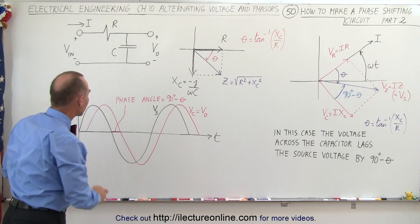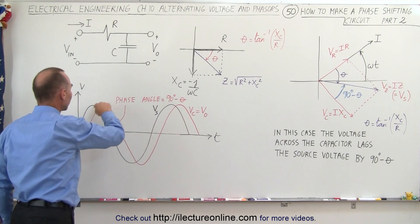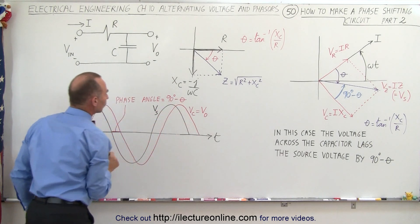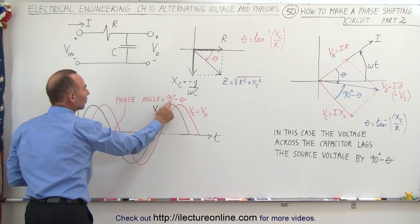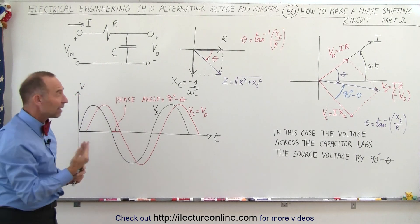So now when we look at this diagram right here, the black line represents the voltage across the source. The red line represents the voltage across the capacitor, which is the same as the output voltage. Notice that it's been shifted to the right, so there's a phase angle here of 90 degrees minus theta. The shift to the right means that it lags. It's a lagging voltage.